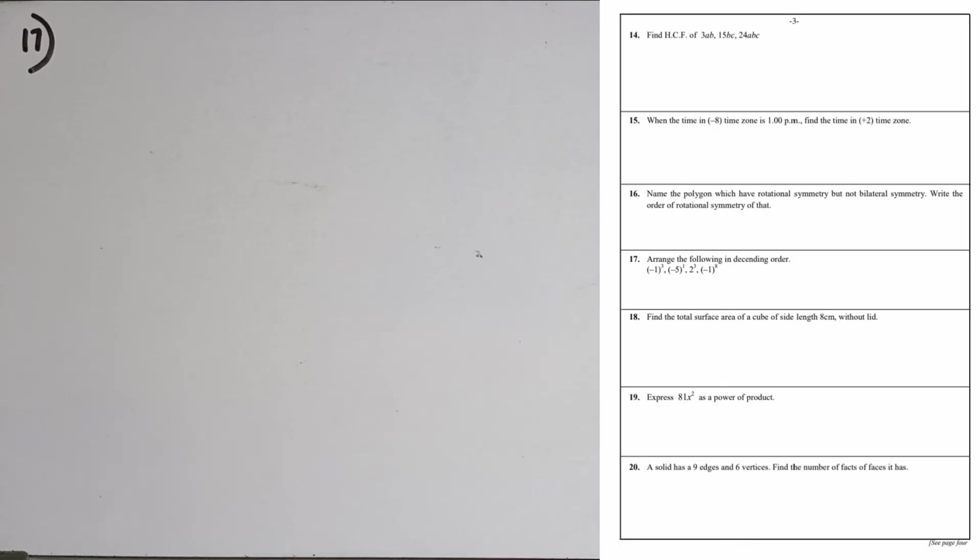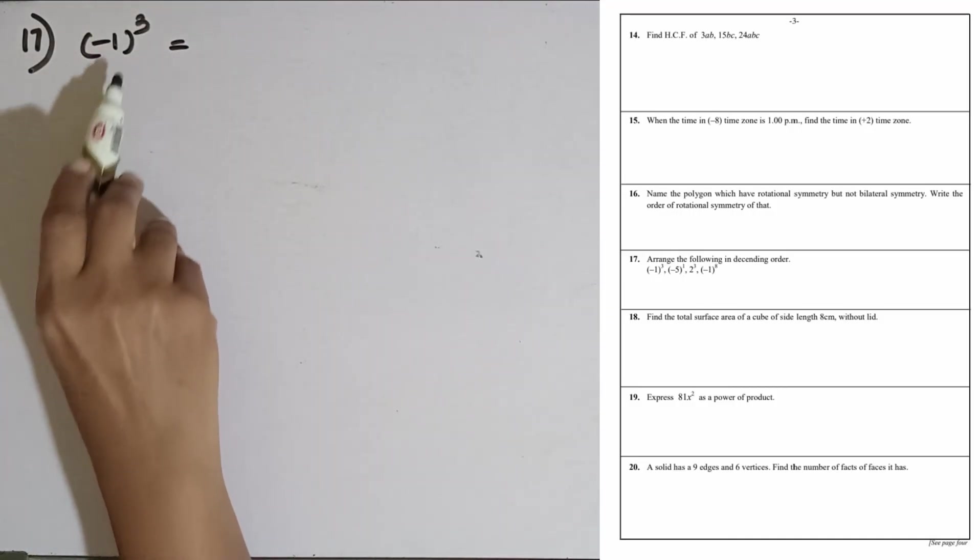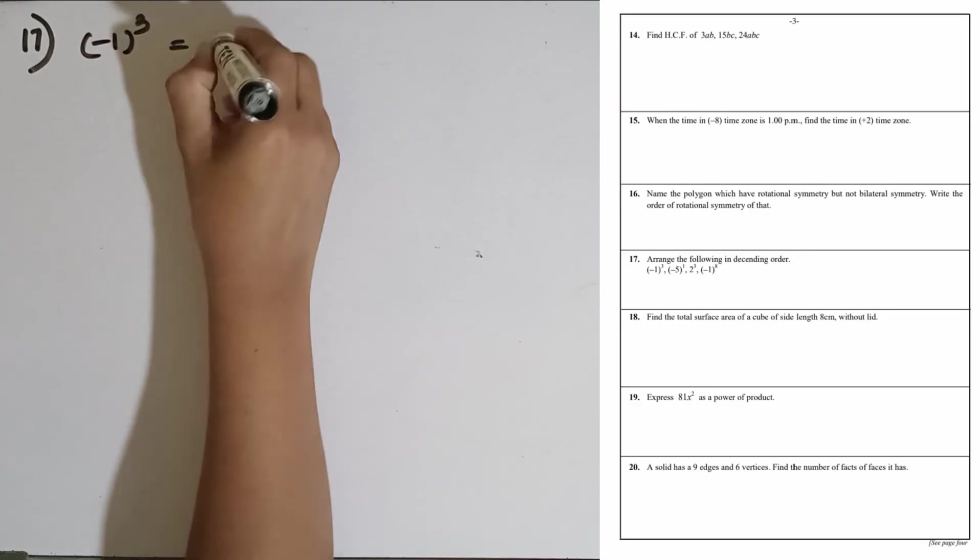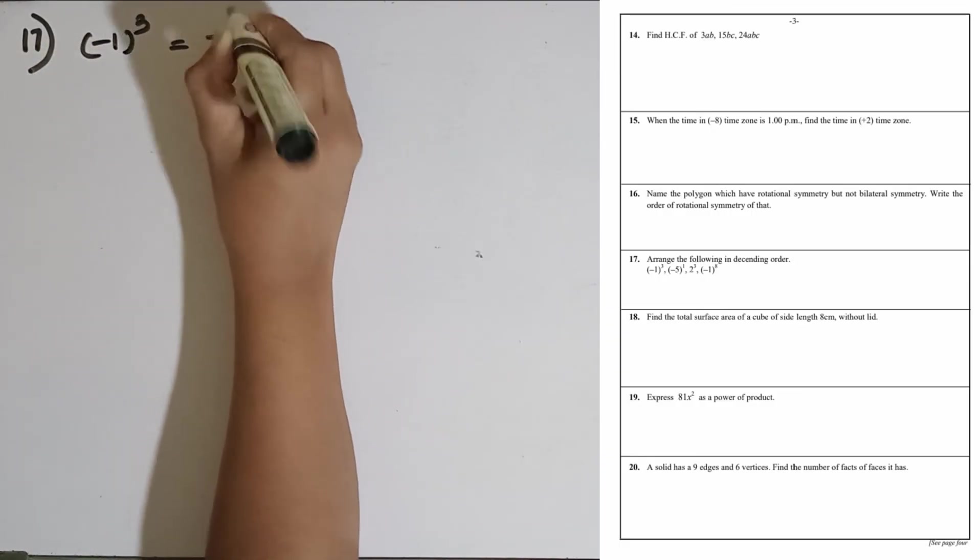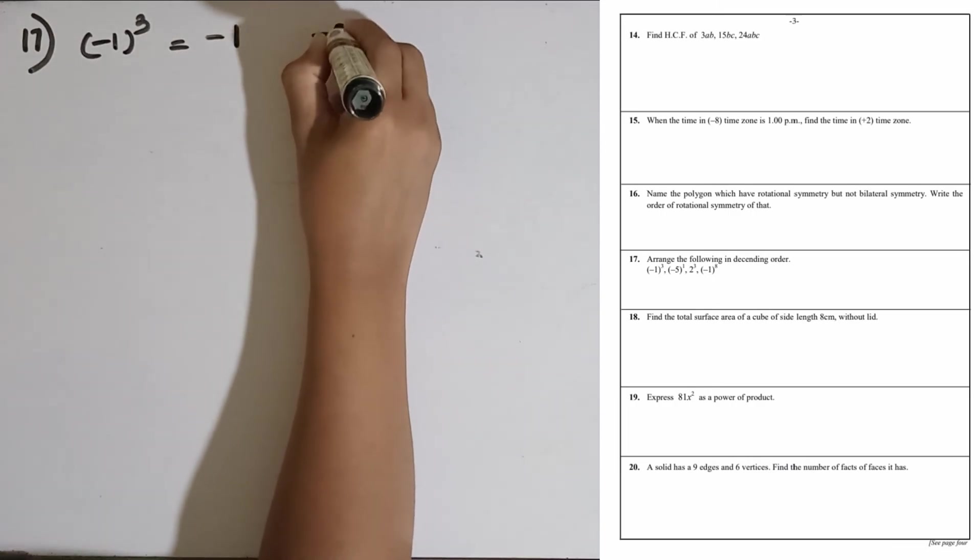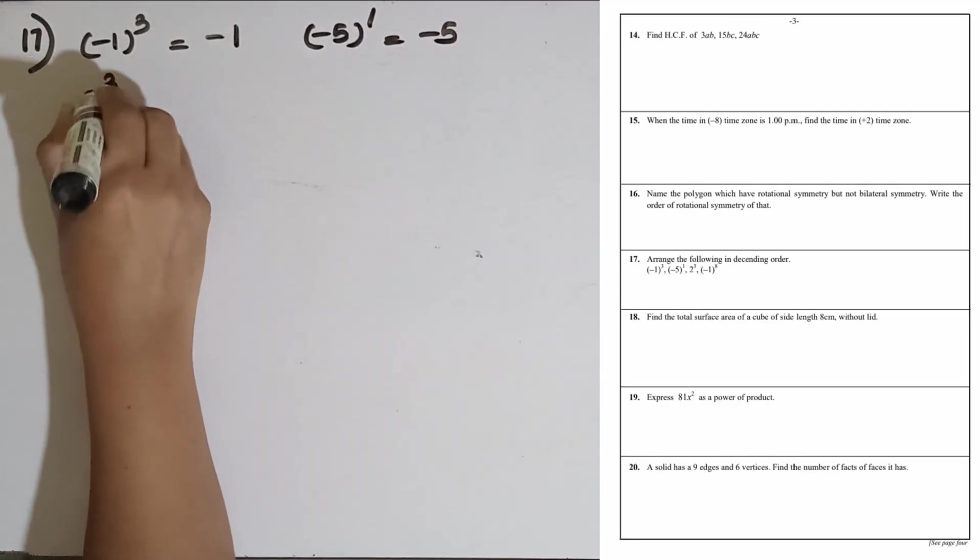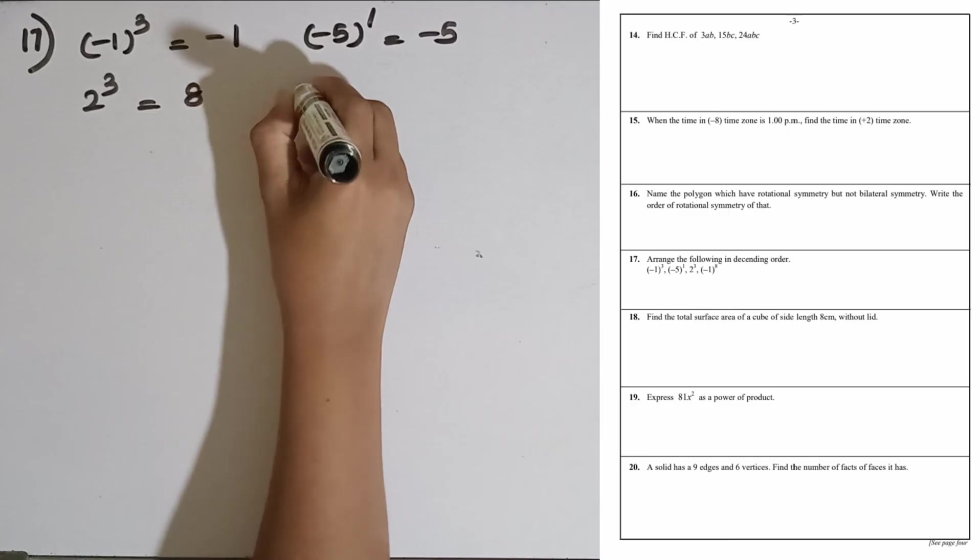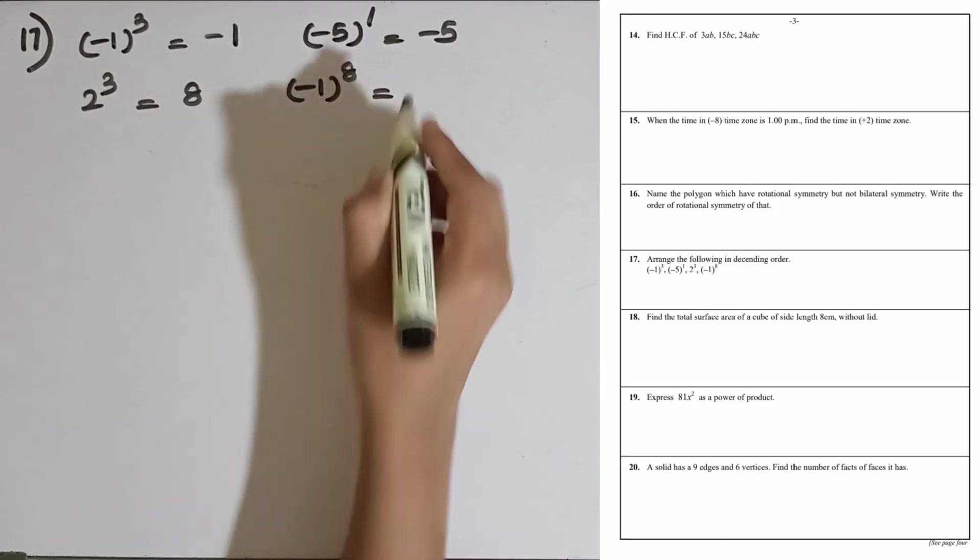Question number 17: Arrange the following in descending order. Let's take the values of the indices. Minus 1 to the power 3, we know that an odd power of a negative number is negative, so minus 1 is the answer. Minus 5 to the power 1, that is equal to minus 5. Then 2 to the power 3, 2 multiplied by 2 multiplied by 2, the answer is 8. Then minus 1 to the power 8, even power of a negative number is positive, the answer is plus 1.